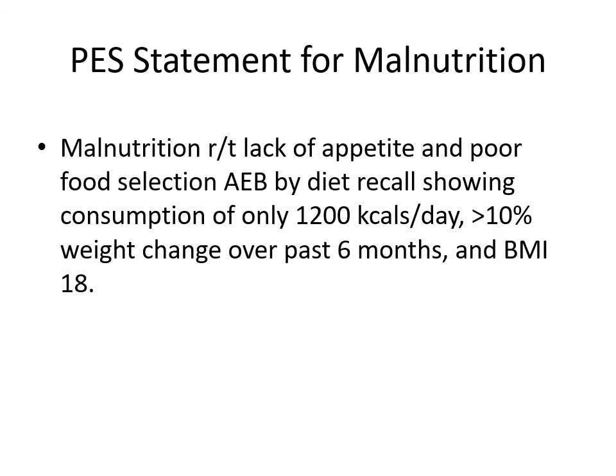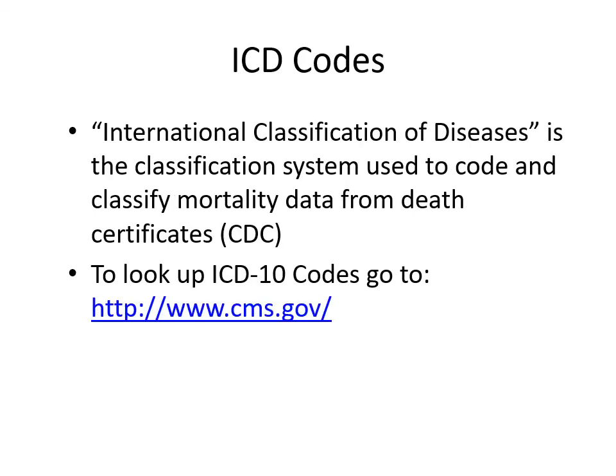An example PES statement for malnutrition: 'Malnutrition related to poor appetite and poor food selection as evidenced by a diet recall showing consumption of only 1,200 calories per day, with a greater than 10% weight change over the past six months and a BMI of 18.' ICD codes (International Classification of Diseases) are how malnutrition is diagnosed from a medical standpoint, which determines reimbursement; these technical definitions are updated periodically and are available on the CMS government website.